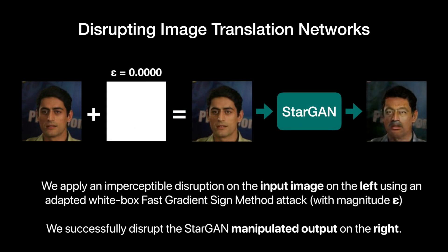We apply an imperceptible disruption on the input image on the left, using an adapted white-box fast-gradient sine method attack with magnitude epsilon. We successfully disrupt the StarGAN-manipulated output on the right.